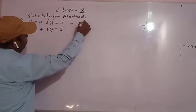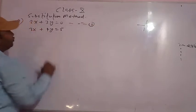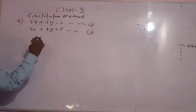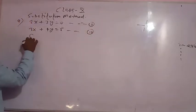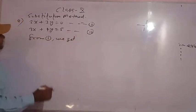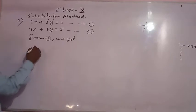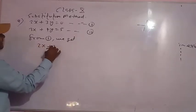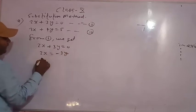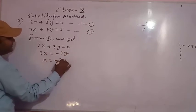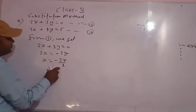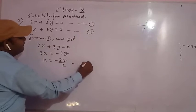We will use the first equation, 2x plus 3y equals 0, and the second is 3x plus 4y equals 5. First of all, we will use the first equation to find the value of x. Here 2x plus 3y is equal to 0, so 2x will be minus 3y, and x will be minus 3y by 2. This will be the third equation.